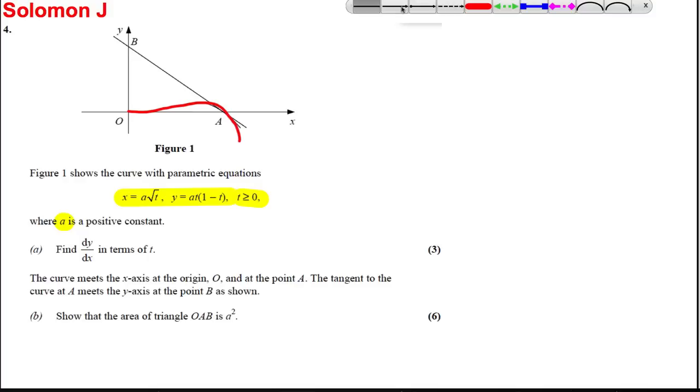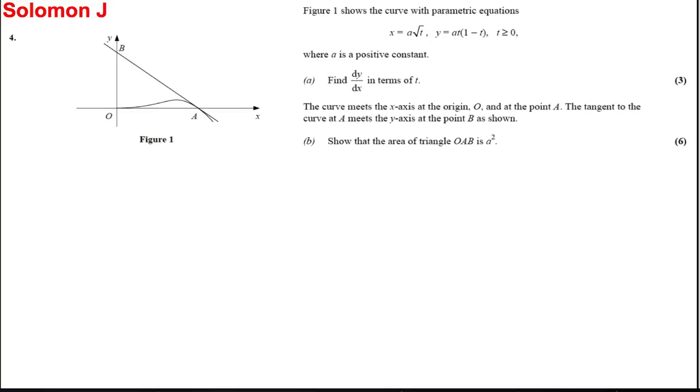I've got some other straight line going on here and those two intersect at point A. For part (a) we're asked to find the gradient dy/dx in terms of t. Then the curve meets the x-axis at the origin and at another point A. The tangent to the curve at A meets the y-axis at B. Show that the area of triangle OAB is equal to a squared.